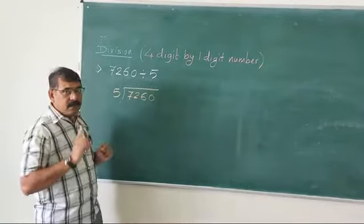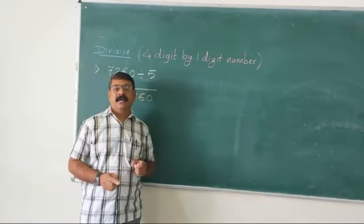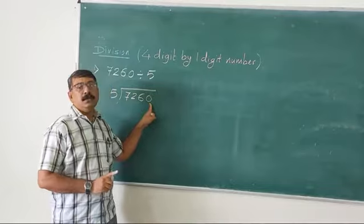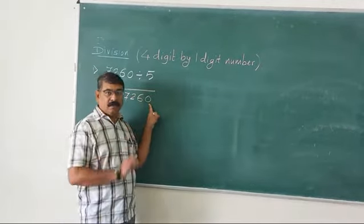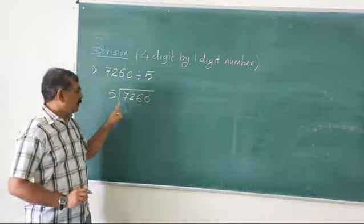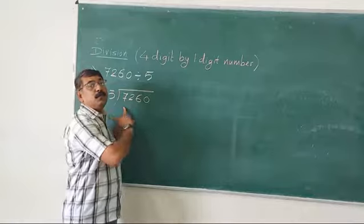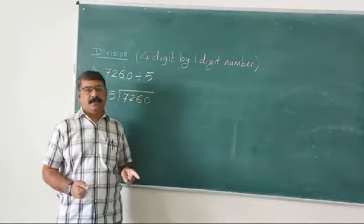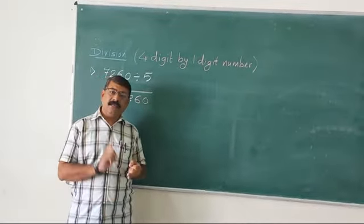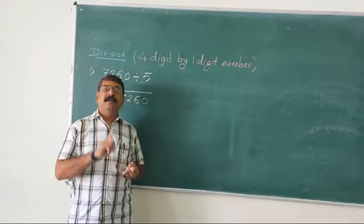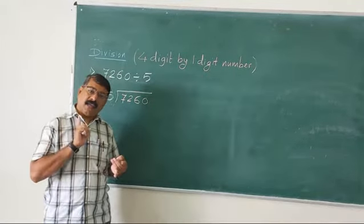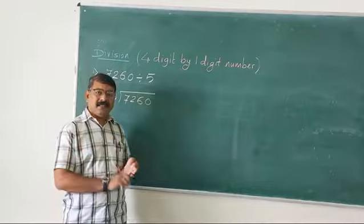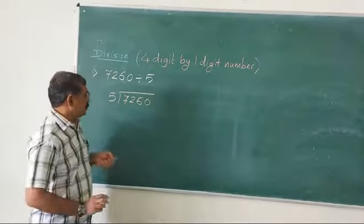You must know that in multiplication we start from the units place, whereas in division we start from left to right. Now we are learning the steps: divide, subtract, take down the number. Again divide, subtract and take down the number. Let us see how we do this.